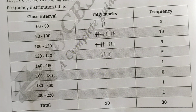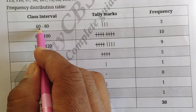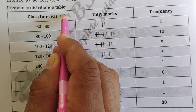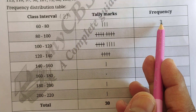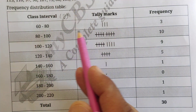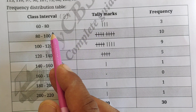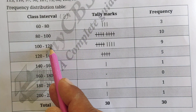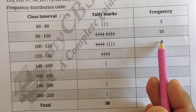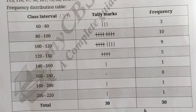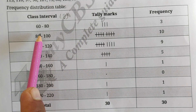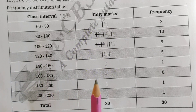In the table, the class intervals are based on weight in grams. From 60 to 80 grams there are 3 oranges, from 80 to 100 grams there are 10 oranges, from 100 to 120 grams there are 9 oranges, and so on. The last interval is 200 to 220 grams with 1 orange. The total number of oranges is 30.